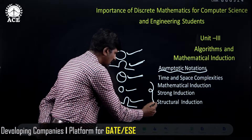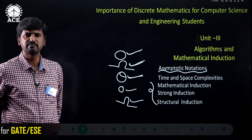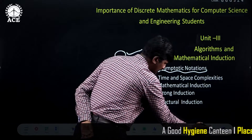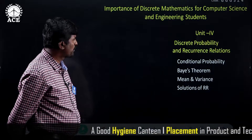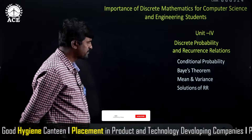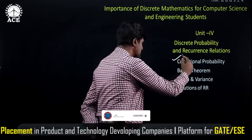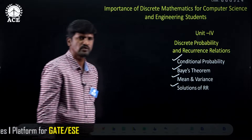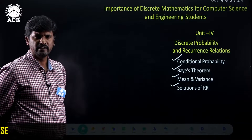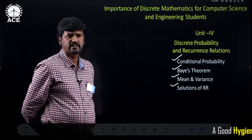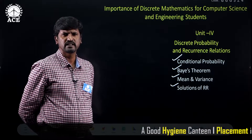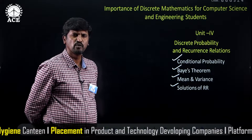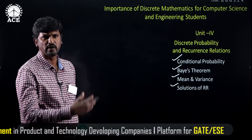These induction techniques are very helpful for students to prove that given statements are true for all natural numbers. The next unit is discrete probability and recurrence relations. Under discrete probability, the student studies conditional probability, Bayes' theorem, mean, and variance. Under recurrence relations, the student learns how to solve given recurrence relations — including linear homogeneous and linear non-homogeneous recurrence relations — using various methods.